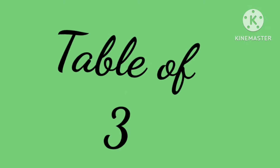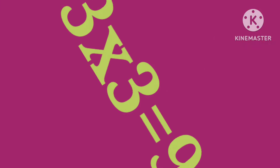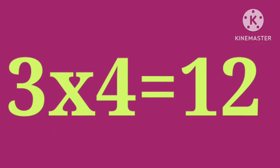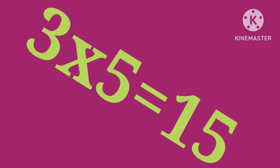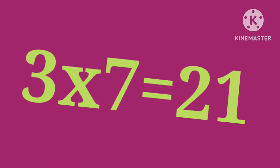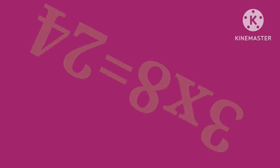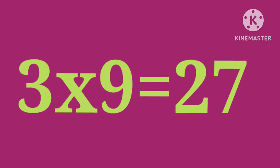Table of three. Three ones are three. Three twos are six. Three threes are nine. Three fours are twelve. Three fives are fifteen. Three sixes are eighteen. Three sevens are twenty-one. Three eights are twenty-four. Three nines are twenty-seven.